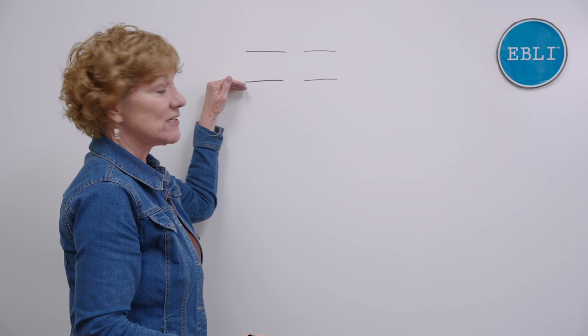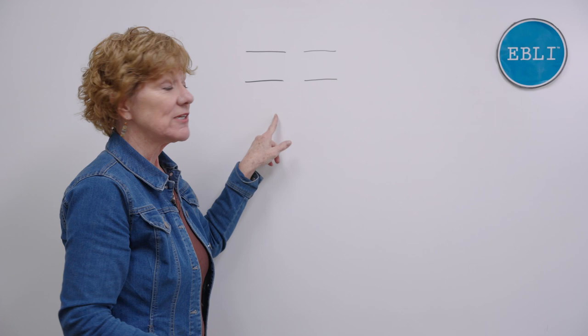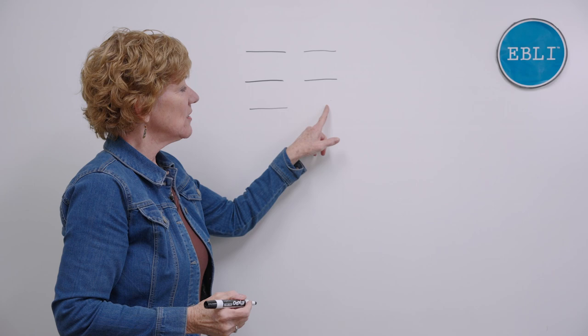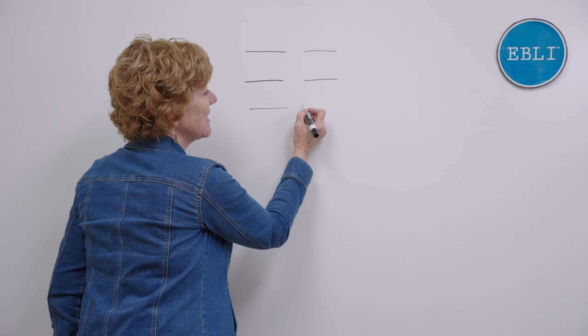Our next word is earn. What's the first sound in earn? What do you say first? That's er. Draw that line and say er. What's our next sound over here in earn? This one is n. Draw that line and say n. Beautiful.